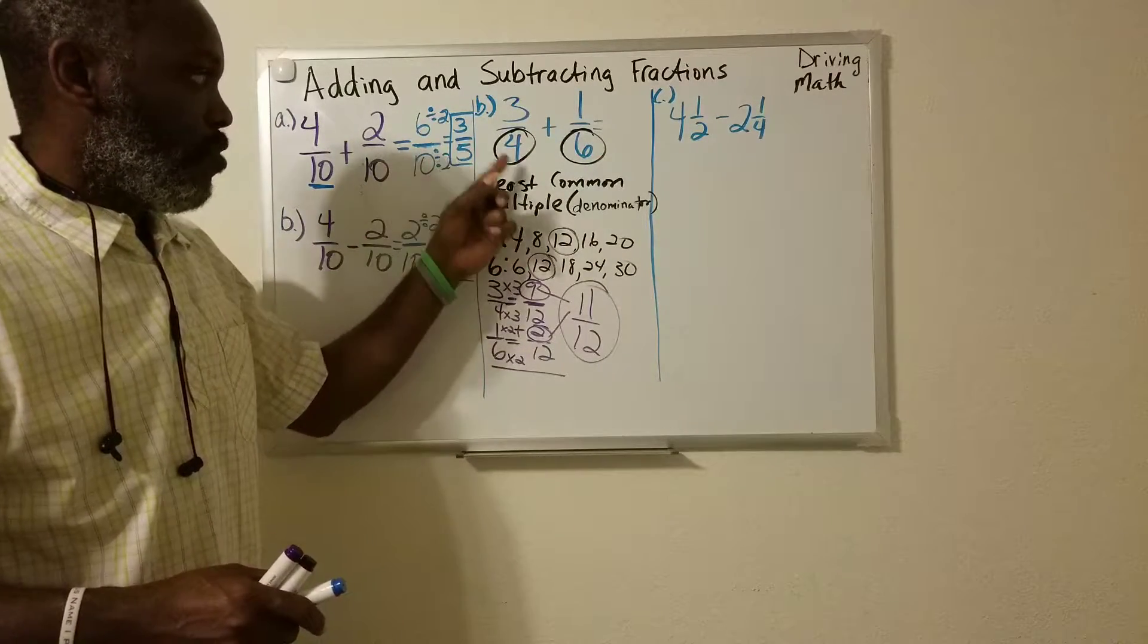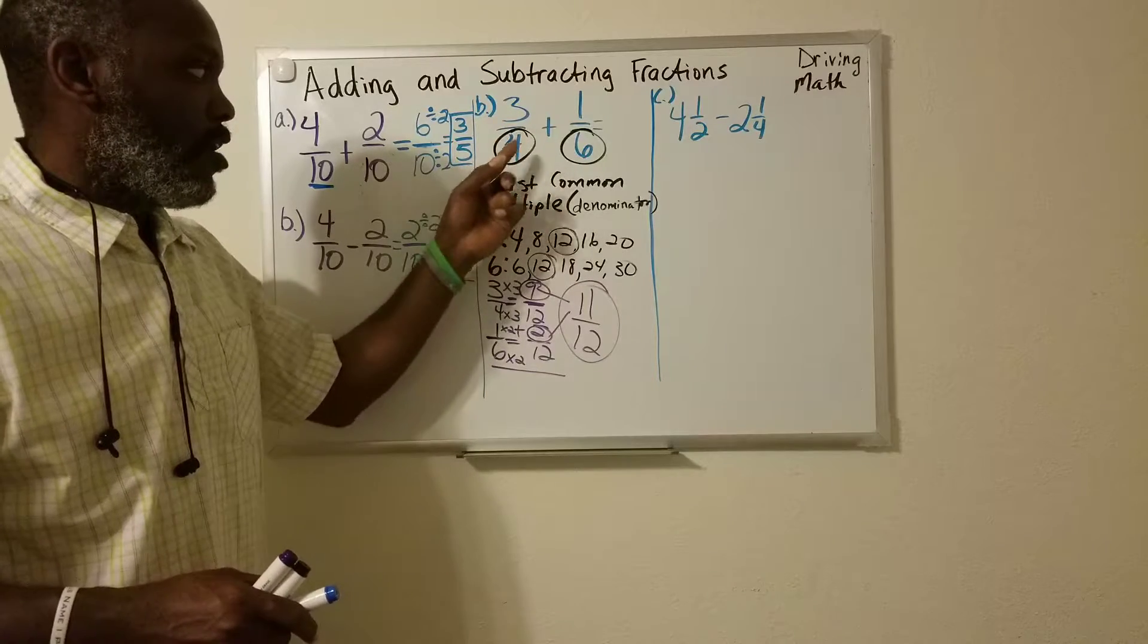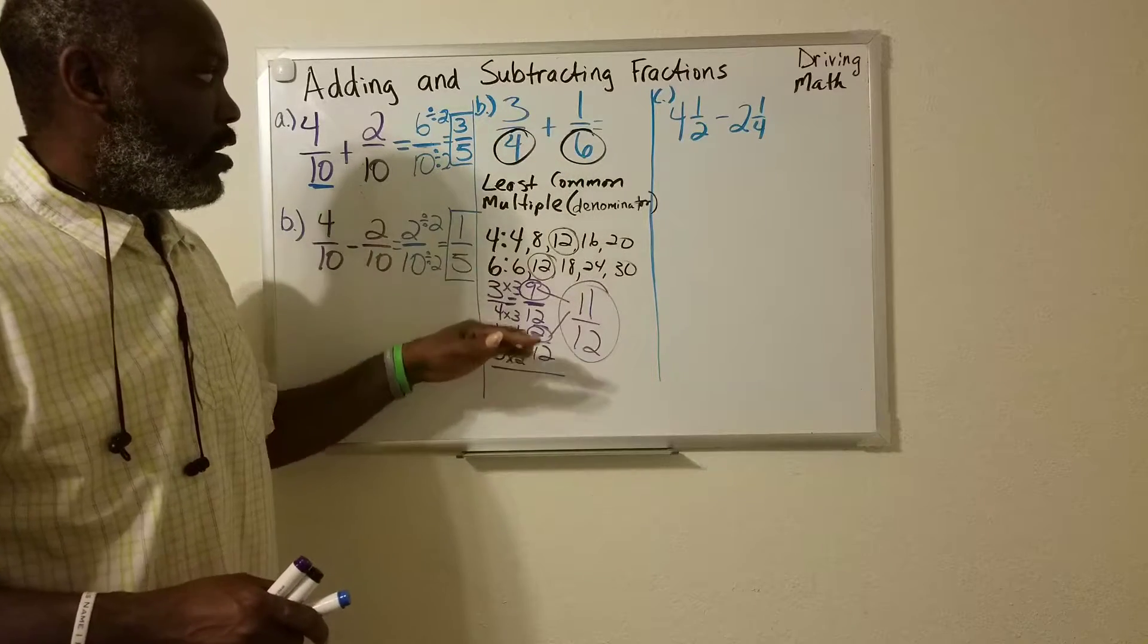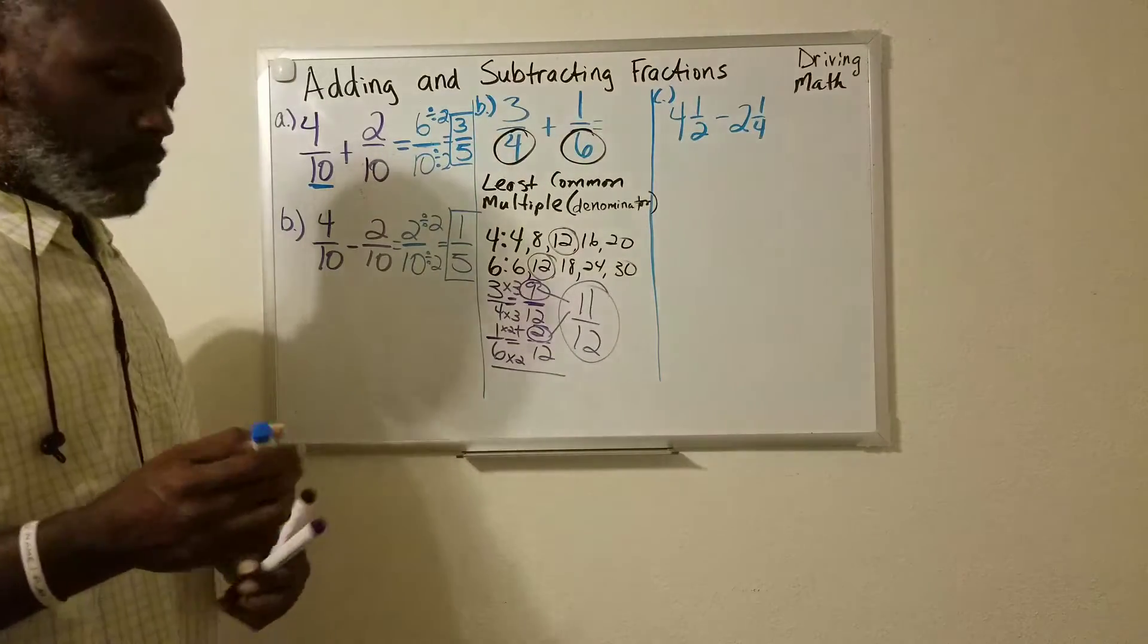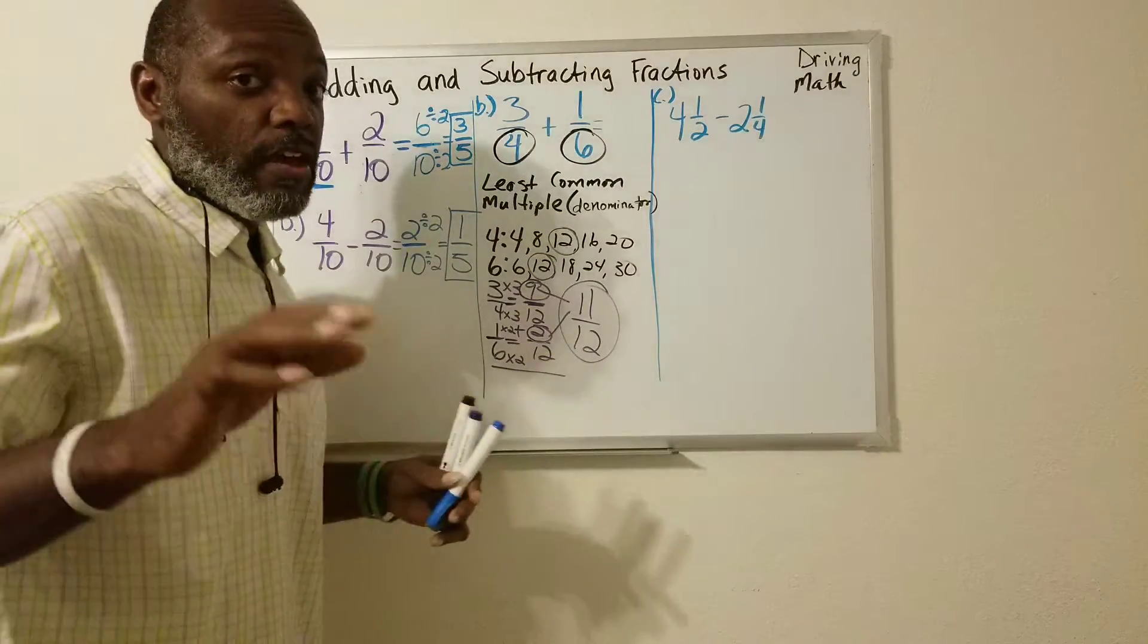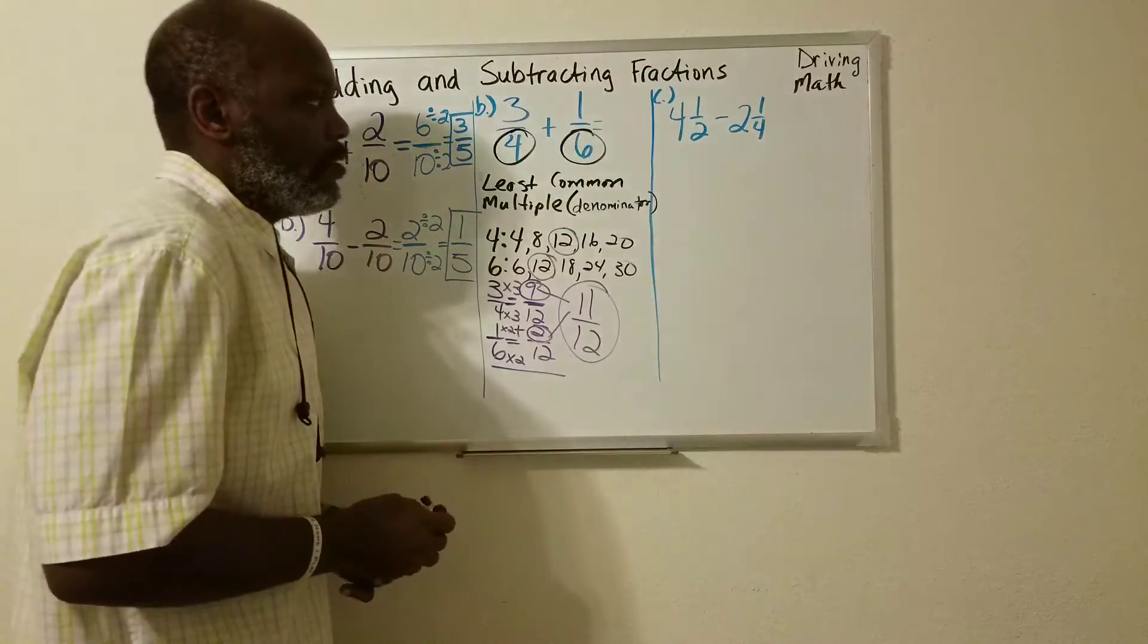You would subtract in the same way. You would find the common denominator, and then you would subtract the numerator. Hopefully I'm not going too fast. If I am, pause it, rewind it.